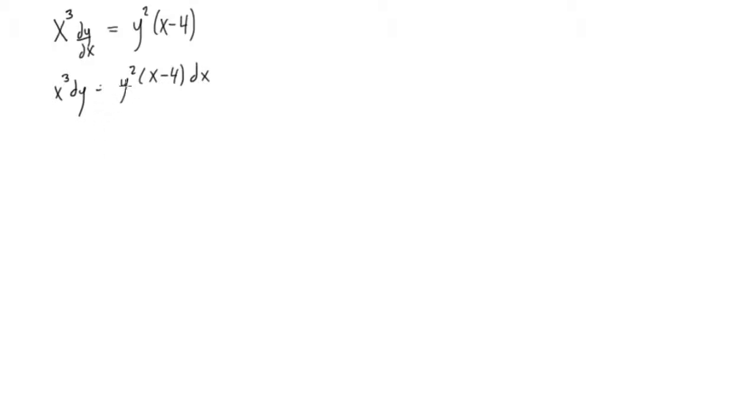So multiply y to the power of minus 2 or divide y squared by both sides. So we will get y minus 2 dy, and we'll do the same thing times x minus 3 to both sides. So we'll get x minus 4 to the x minus 3 dx.